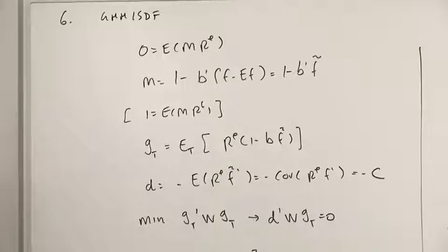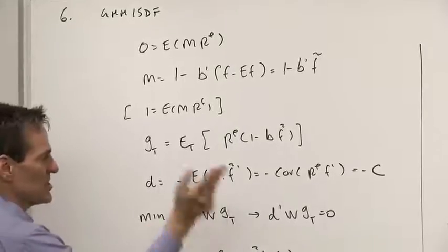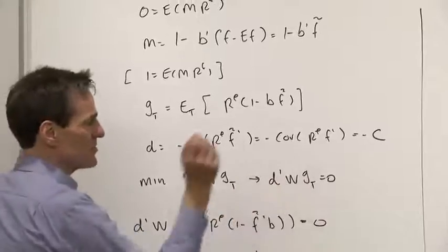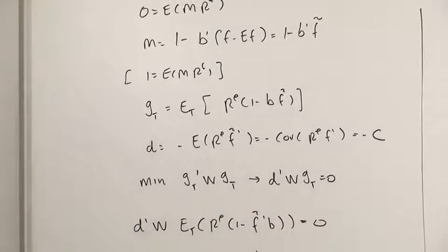Let's do the minimization GMM, so we'll minimize gt prime w gt. The first order condition is d prime w gt equals 0, so let's write out what that means. We're going to do GMM right here on the board.